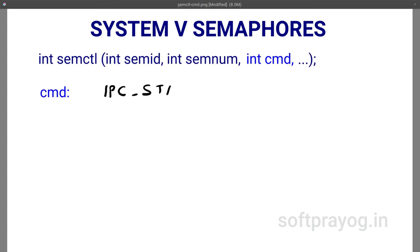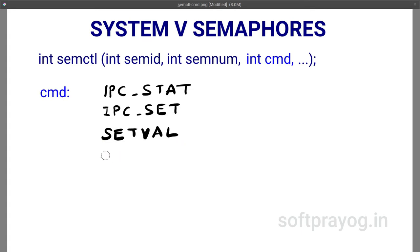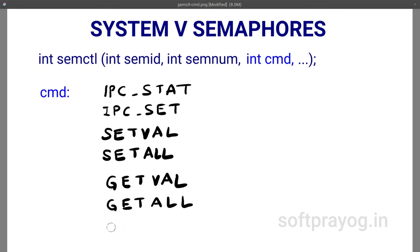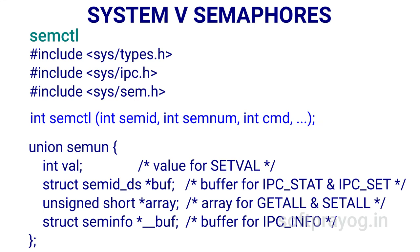The commands include: IPC_STAT for getting the status of the semaphore set, IPC_SET for setting some fields of the kernel data structure, SETVAL for setting the value of a semaphore in the set, SETALL for setting the values of all semaphores in the set, GETVAL for getting the value of a semaphore, GETALL for getting the values of all semaphores, and IPC_RMID to remove the semaphore set. semctl has an optional fourth parameter of type union semun, which has four members — only one active at a time.